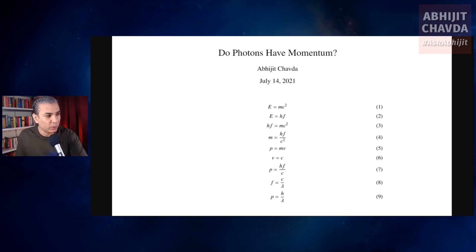So do photons have momentum? We know that from Einstein's famous equation, E equals mc squared—if you can see equation number one here, E equals mc squared. So mass is equivalent to energy, energy is equivalent to mass. Now, in case of a photon, which is light, we know that it has no mass,